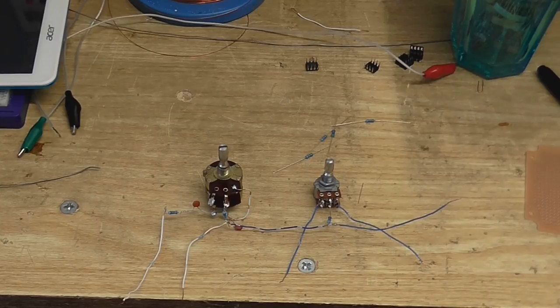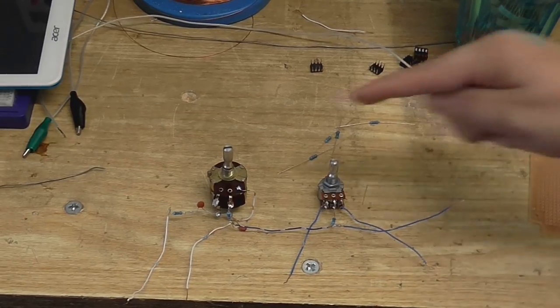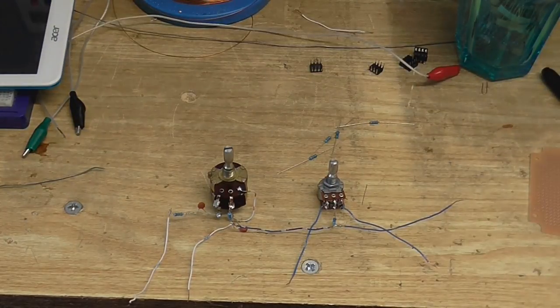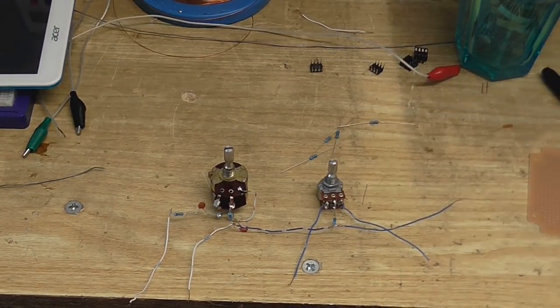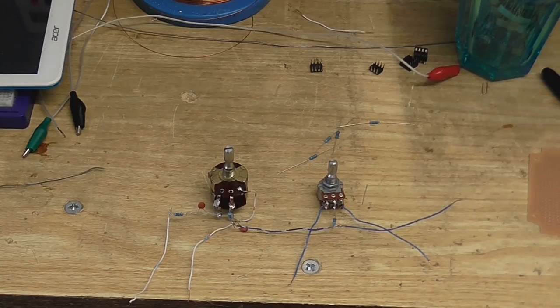Right, so I've done the point-to-point wiring. This one is going to be the frequency selector potentiometer. And this one is going to be to select how much I want to boost or cut.